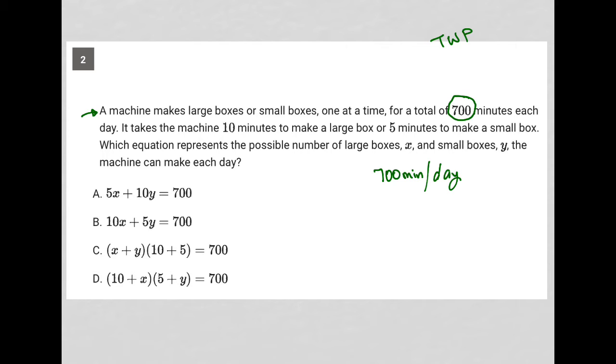The next sentence says it takes the machine 10 minutes to make a large box. So LB for large box equals 10 minutes or five minutes to make a small box. So SB for small box is equal to five minutes.